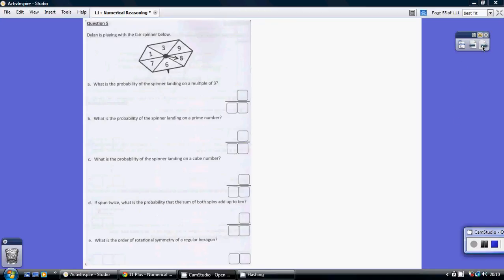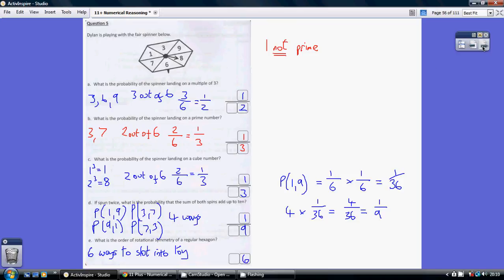Question 5, what is the probability of the spinner landing on a multiple of 3? So how many of these are a multiple of 3? Well 3, 6 and 9 are, so there are 3 of them.